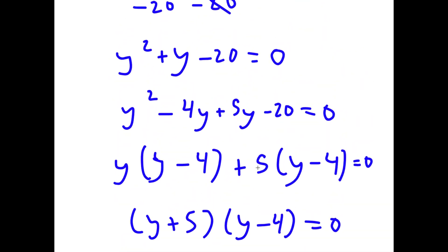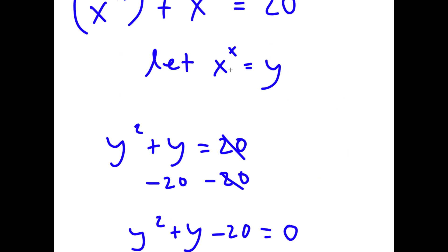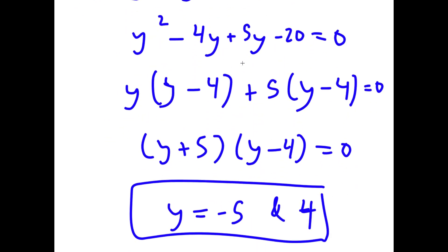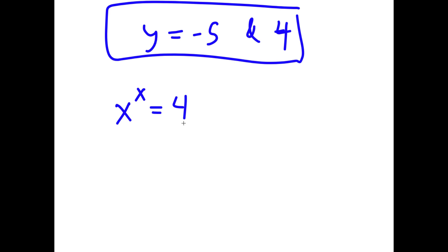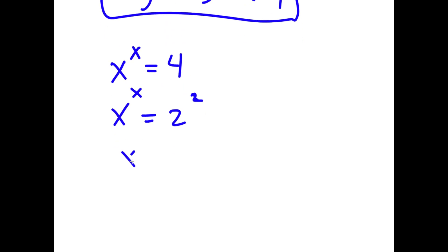We aren't done yet because we set x to the power of x equal to y. Starting with y equals 4: x to the power of x equals 4. We want 4 in the form of a number to the power of that same number. Well, 4 is the same as 2 squared, so 2 squared equals x to the power of x, meaning x equals 2.